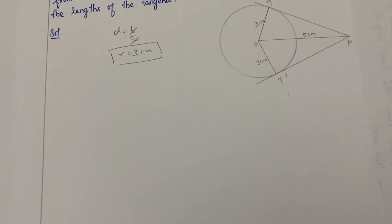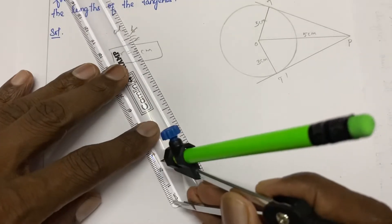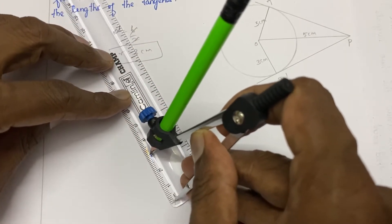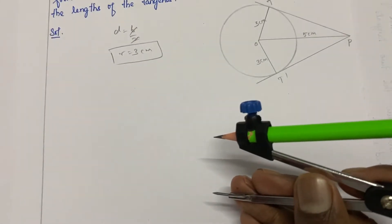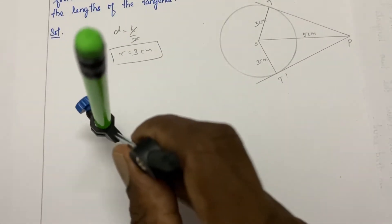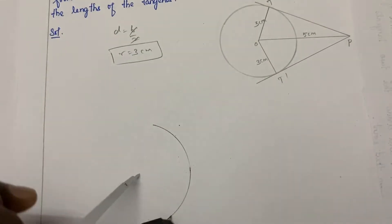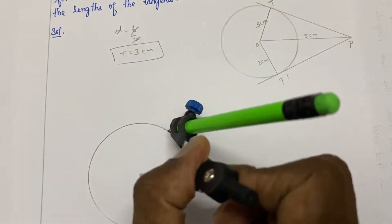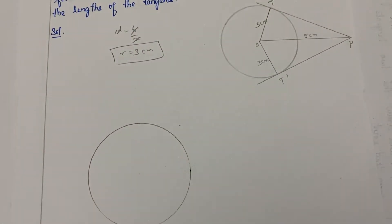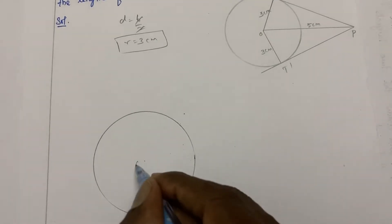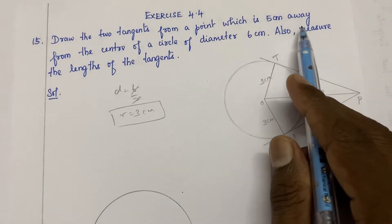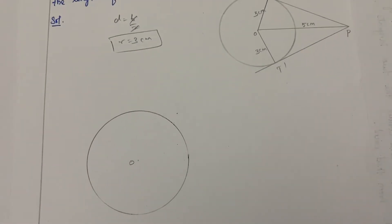Set the compass to 3 centimeters and draw the circle. Mark the center point O. Then, from the center, mark a point 5 centimeters away and draw a line to that point.